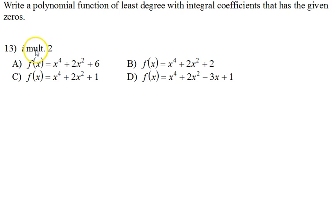Let's look at one with complex, number 13. i with multiplicity 2. So that means i is twice. Well, I told you if it's complex as well, it comes in a pair. So if positive i is an answer, then negative i is also an answer. So those are our four choices.